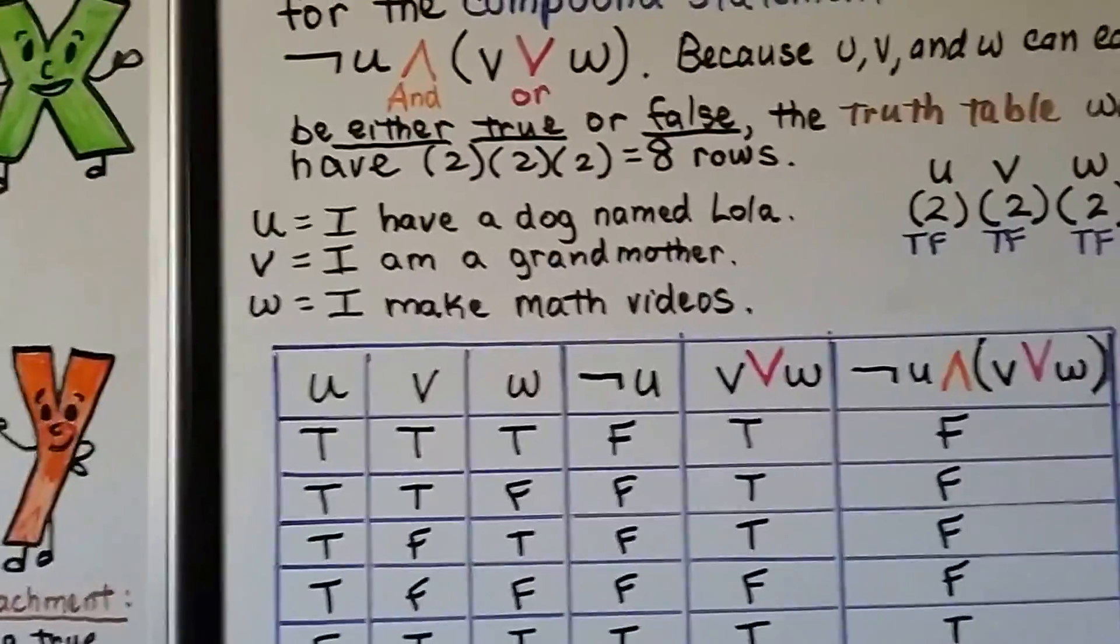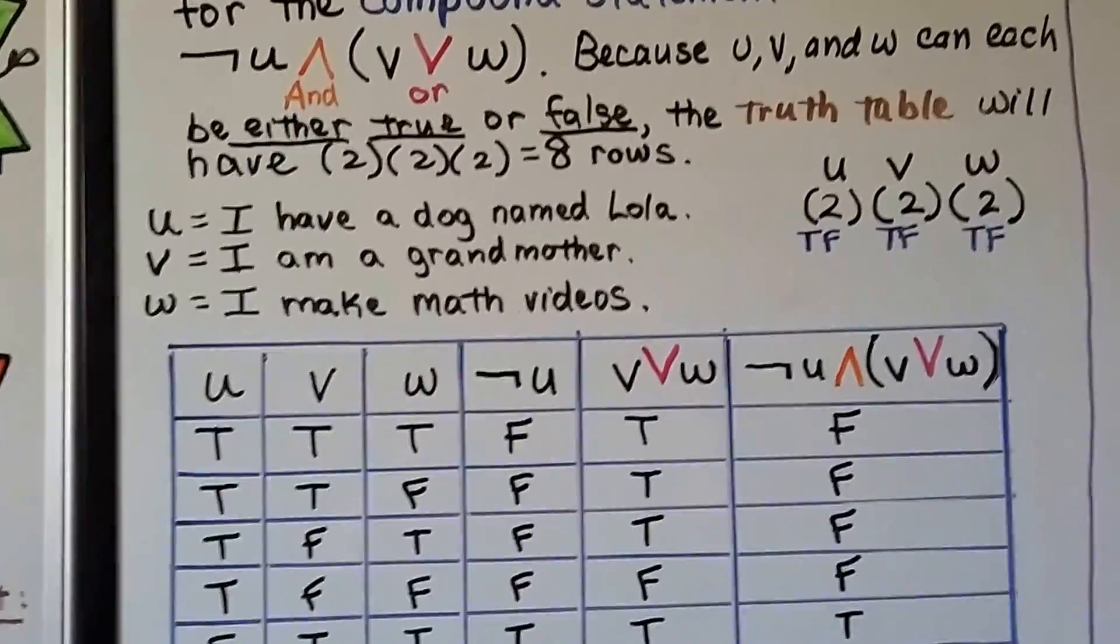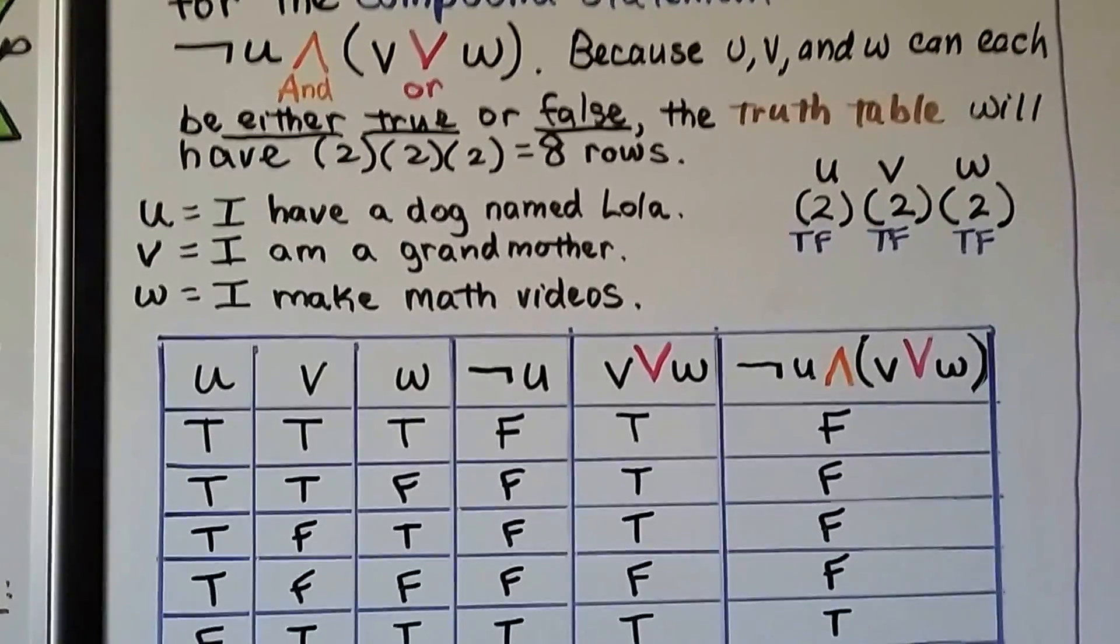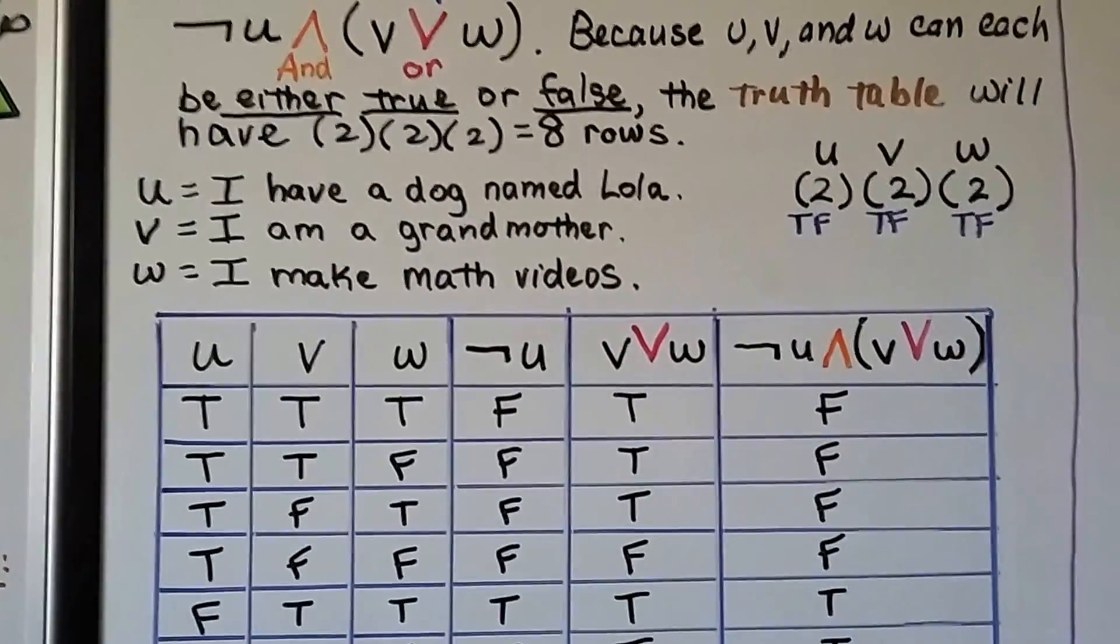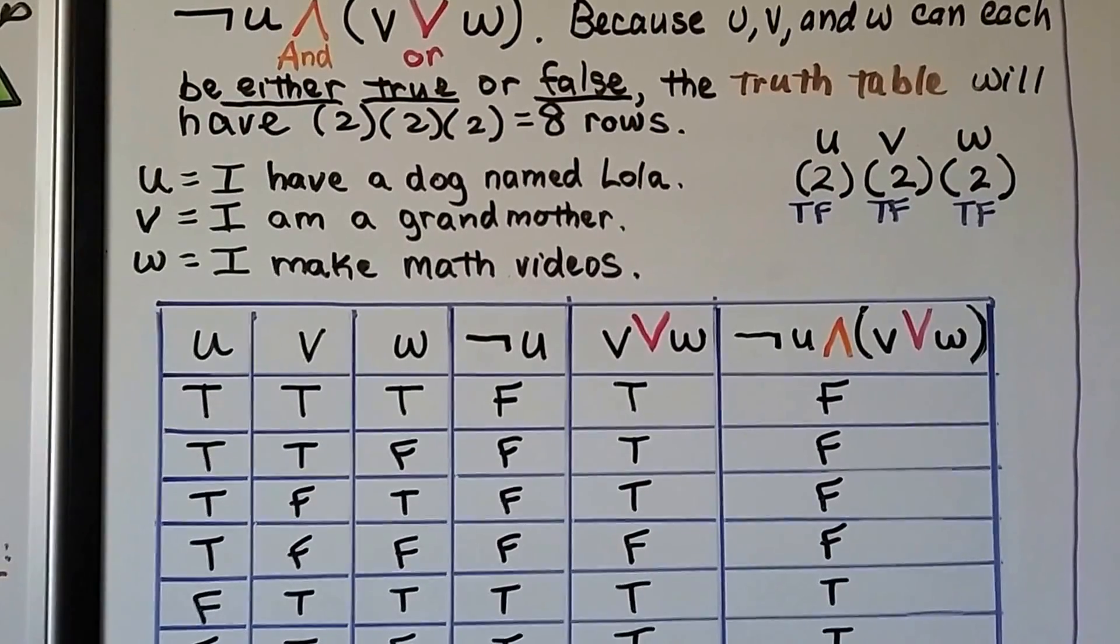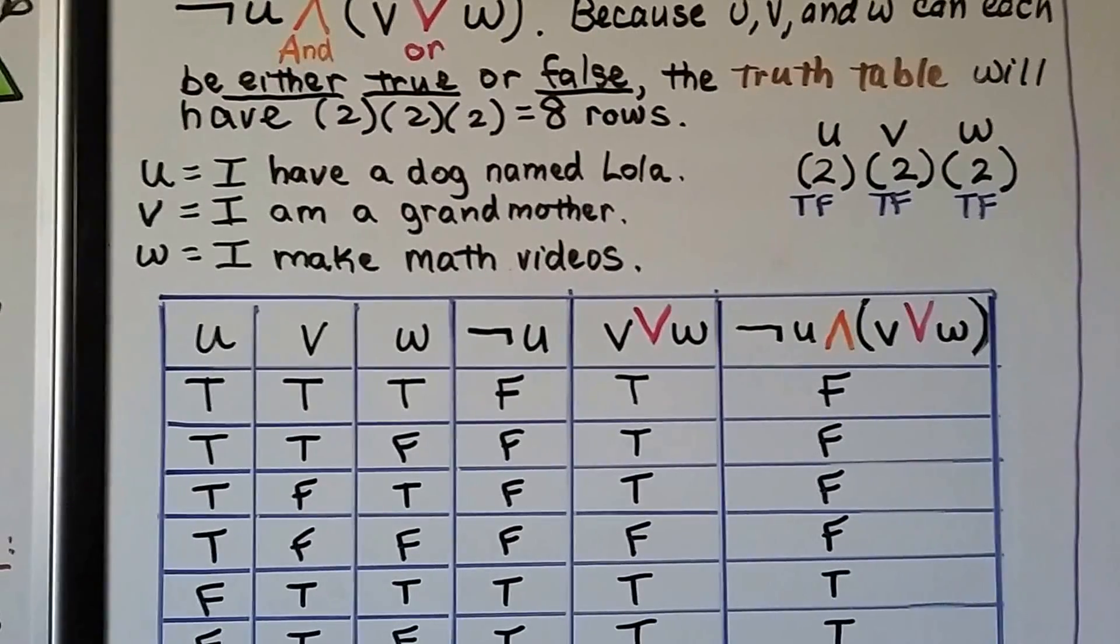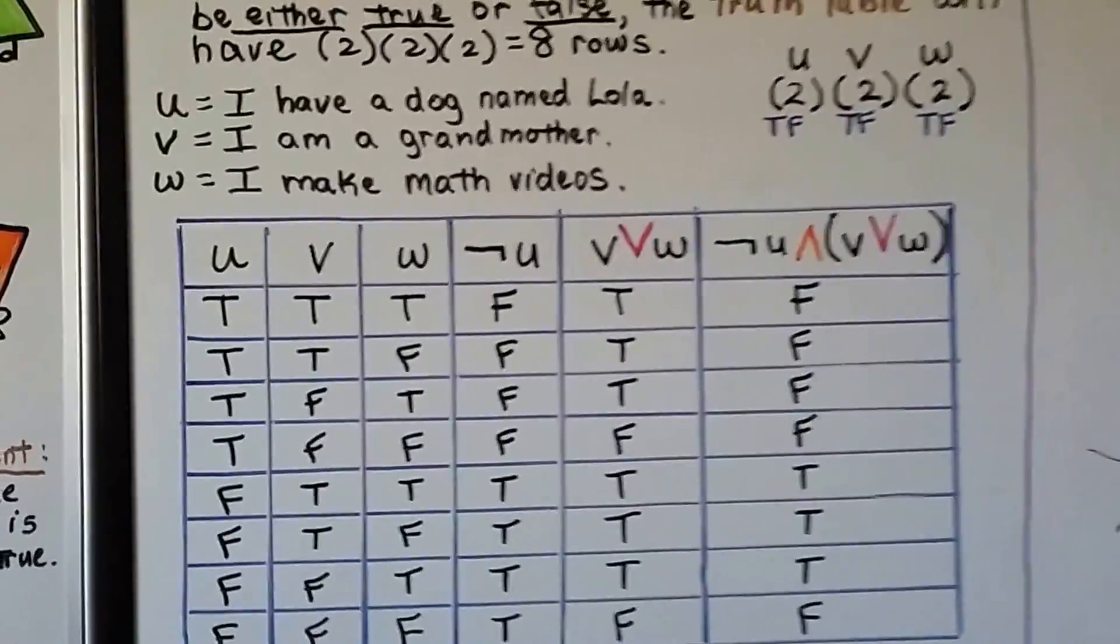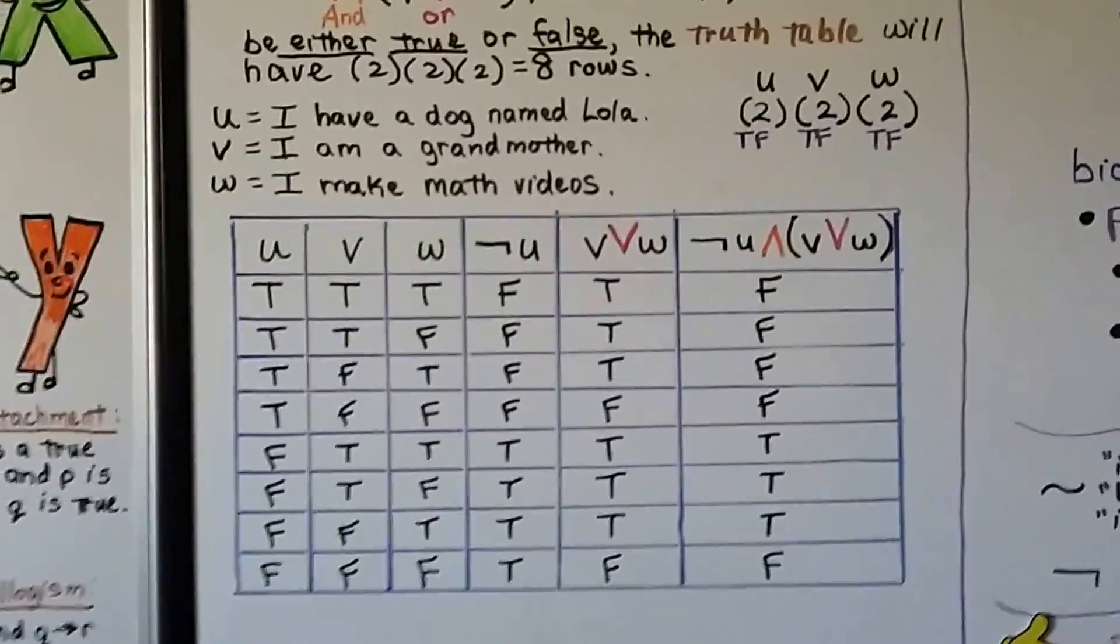So here's my statements. For statement U, I have a dog named Lola. Well, if you're a subscriber, you know I have a dog named Lola. V, I am a grandmother. Also, if you're a subscriber, you know I'm a grandmother. W, I make math videos. Well, that's kind of given, isn't it?